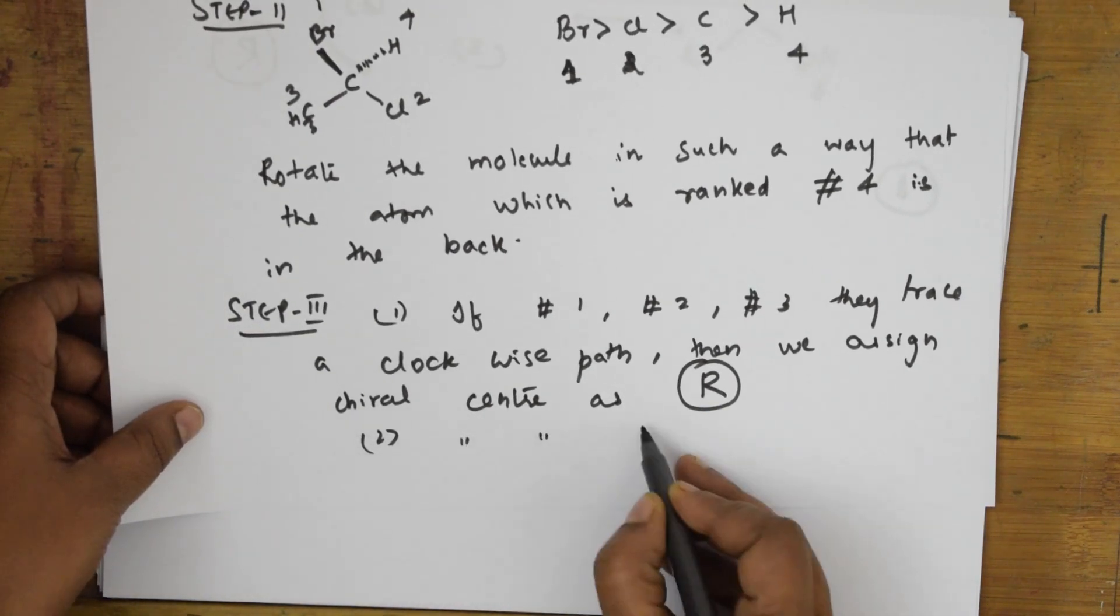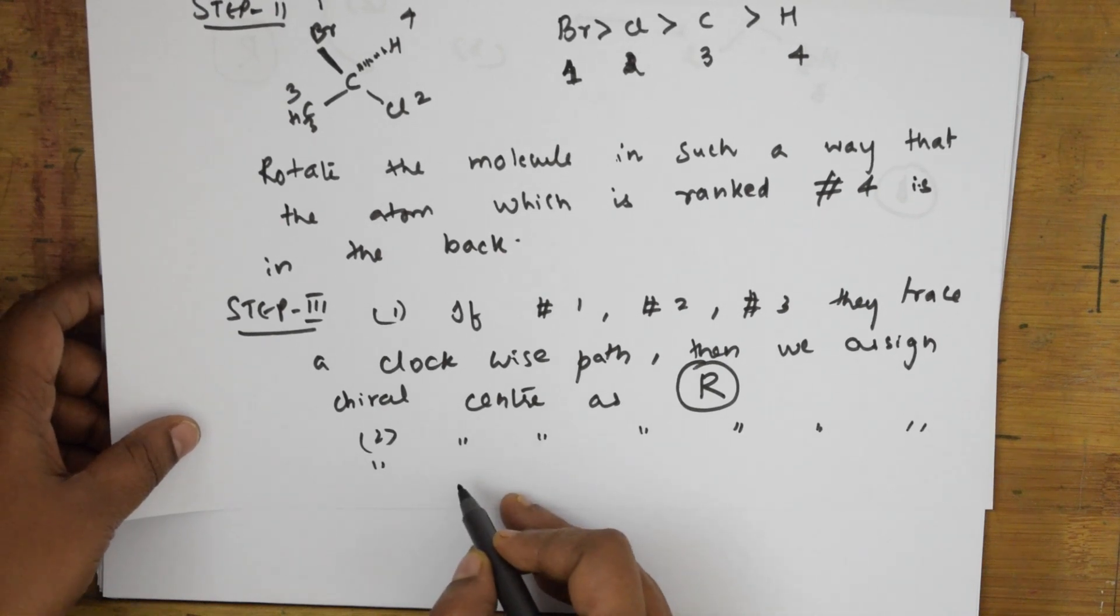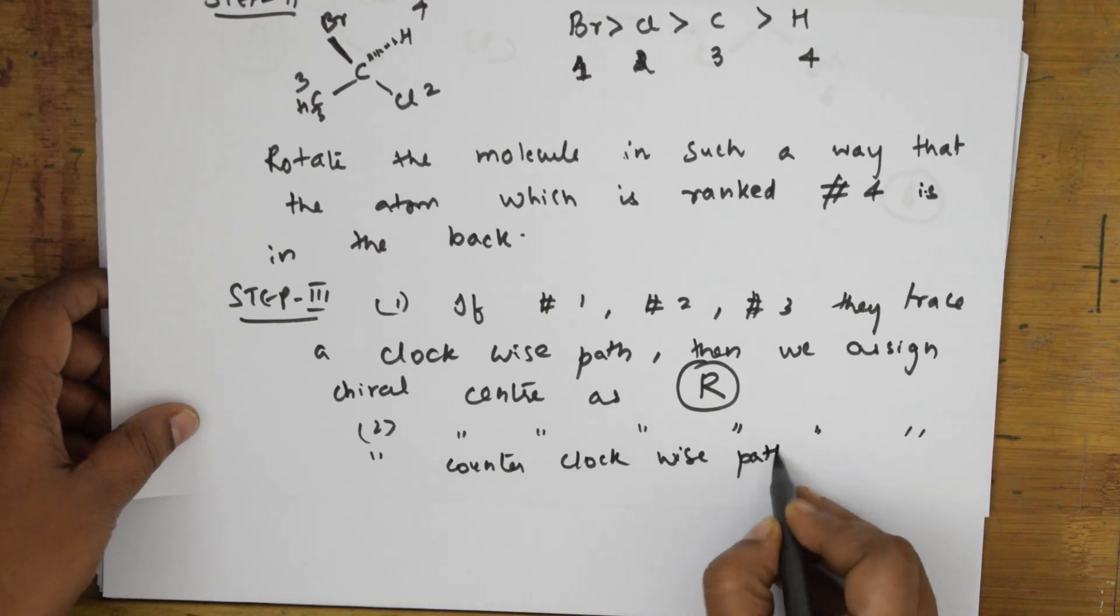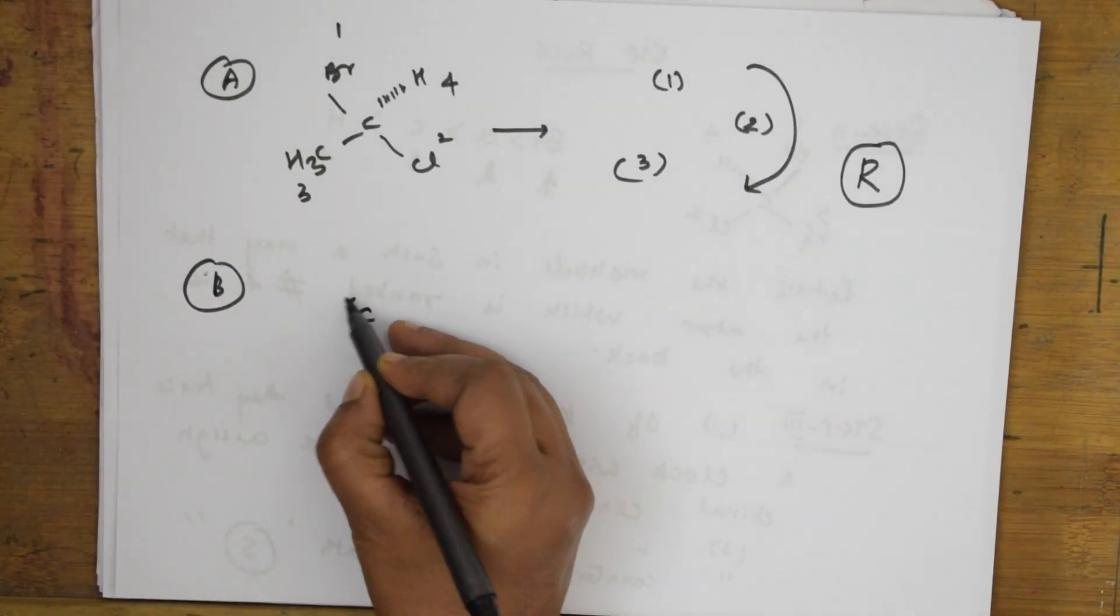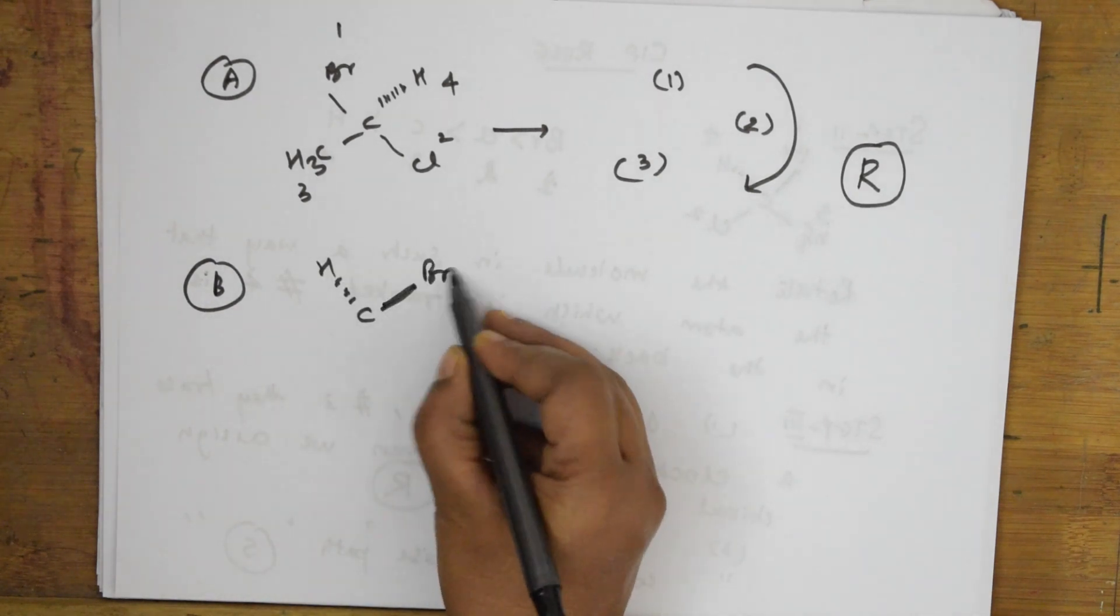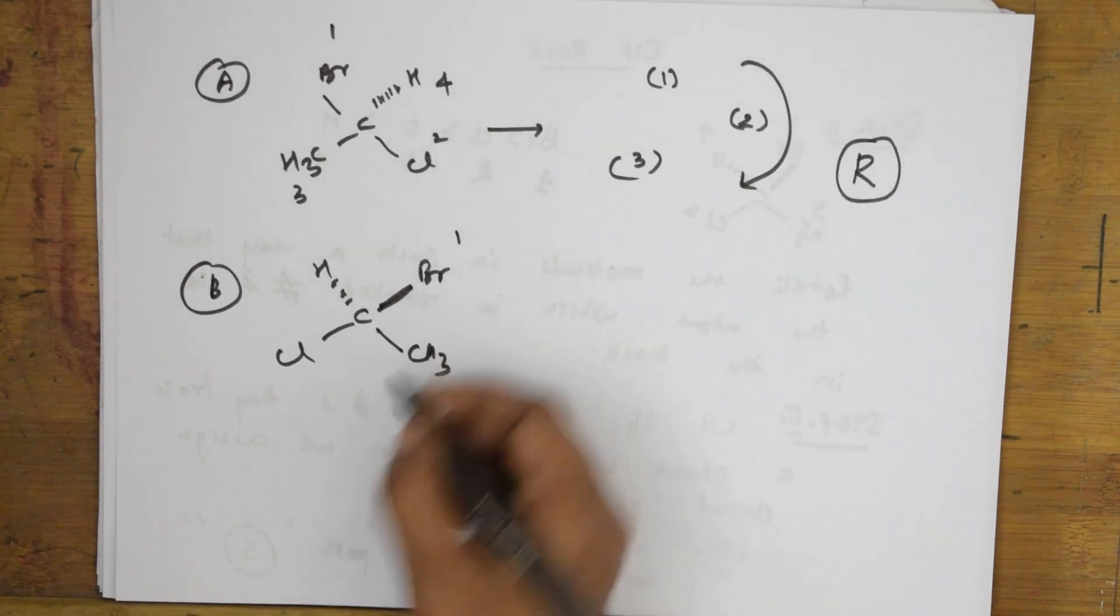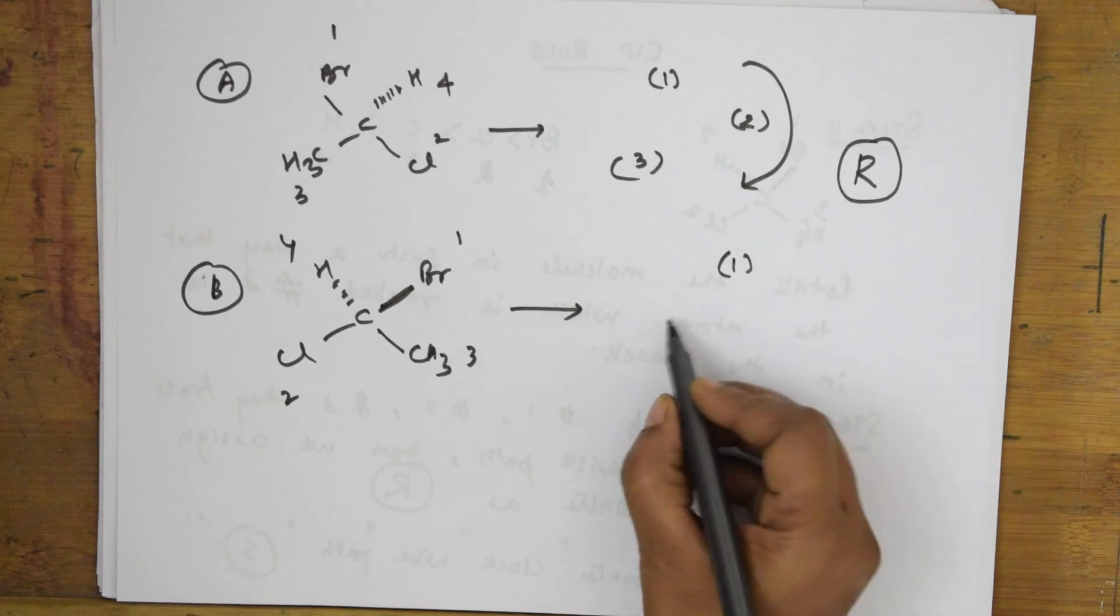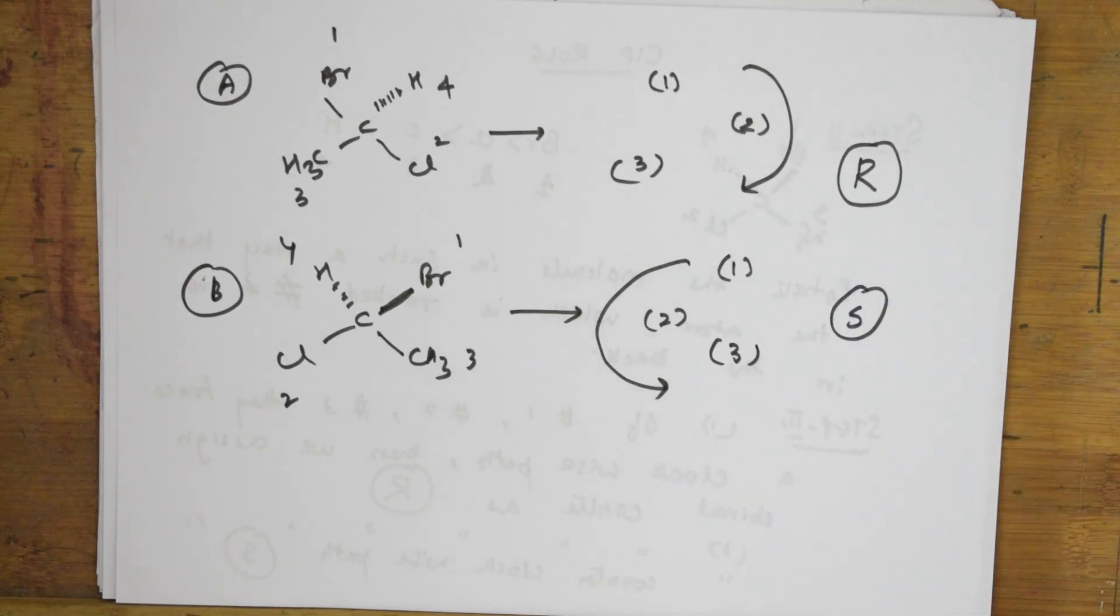Suppose if the same thing, if one, two, three trace a counterclockwise, that means anticlockwise direction or counterclockwise path, then I name it as S system. Let's see the same example. H, Br, CH3, Cl—number it: this is one, this is two, this is three, this is four. If it rotates in this direction, then I call the system S system. R system in the clockwise direction, S system in the anticlockwise direction.